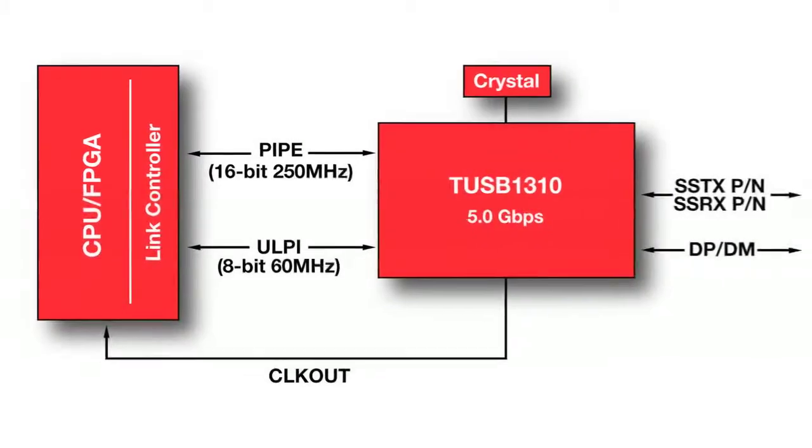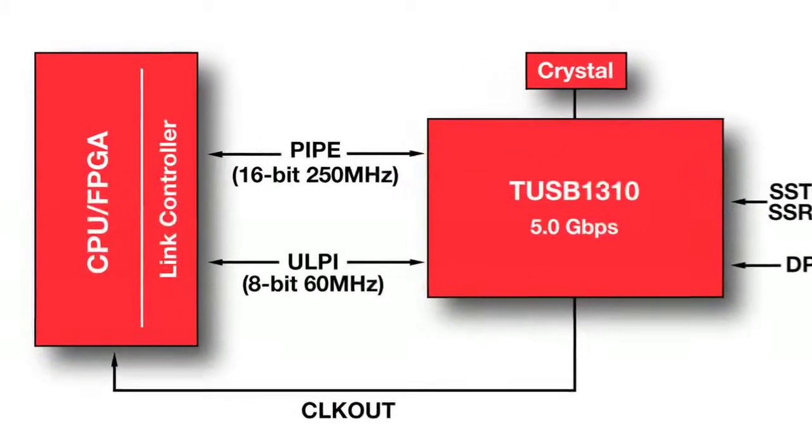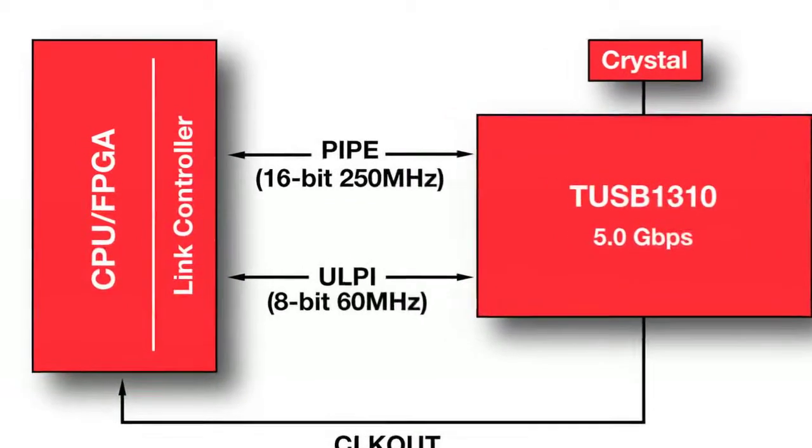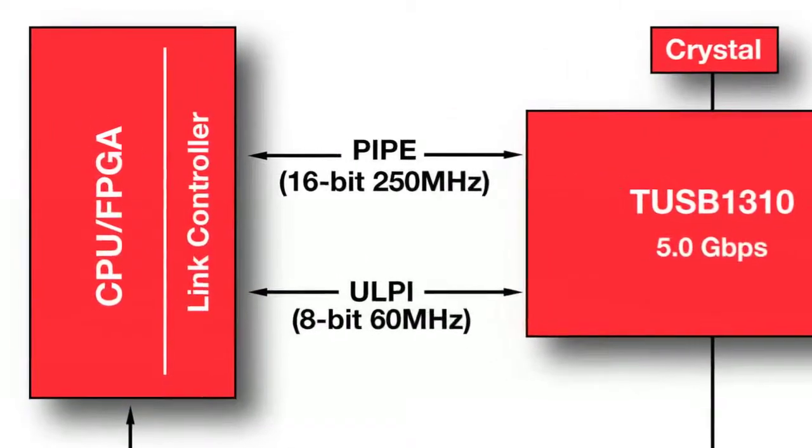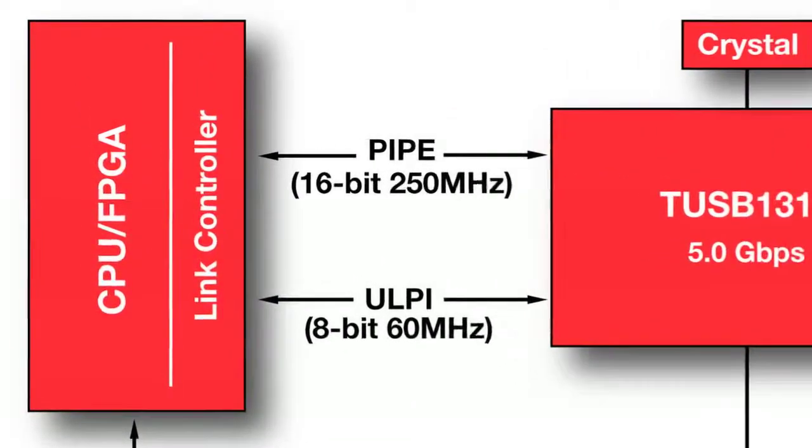With a receiver sensitivity of less than 50 mV peak-to-peak, it performs twice as well as what is required by the USB 3.0 specification, enabling easier board layout and the use of longer cable links by the consumer. The USB 3.0 controller interfaces to the TUSB1310 via a pipe interface for SuperSpeed USB 3.0 and a ULPI interface for USB 2.0. Both are industry standard specifications.